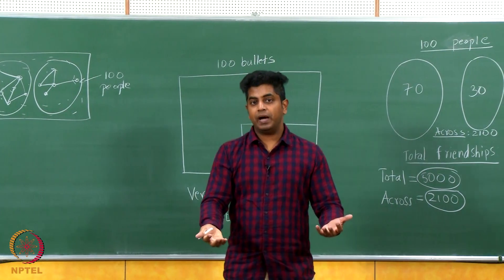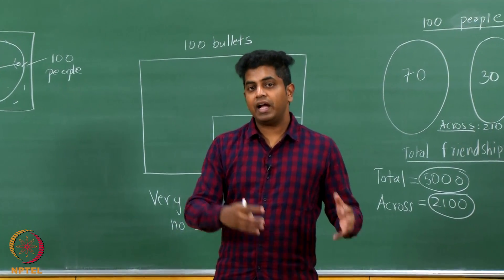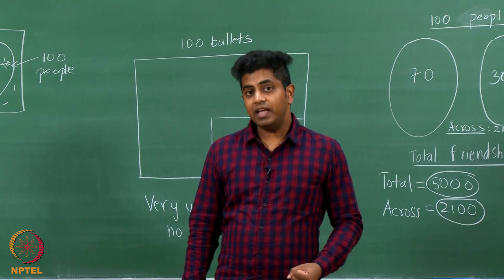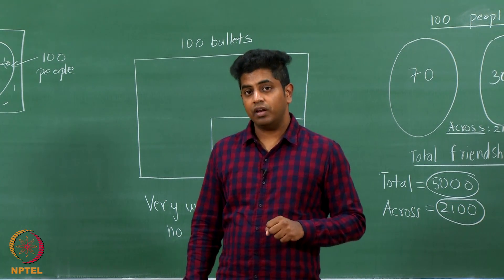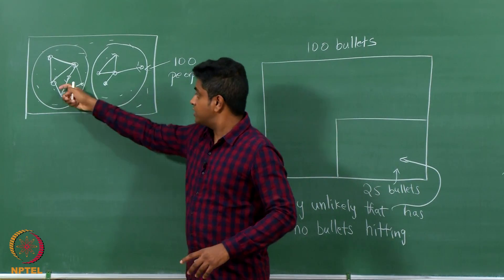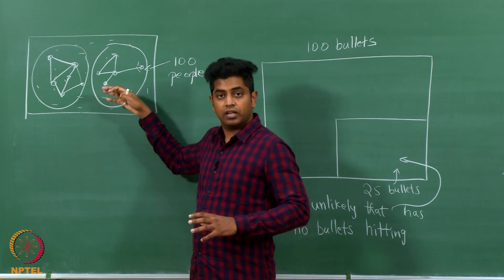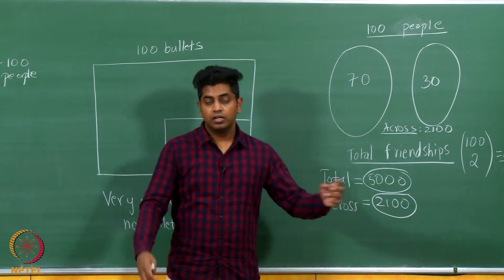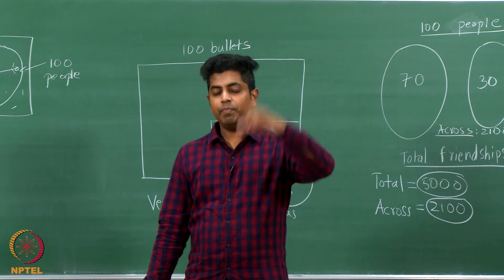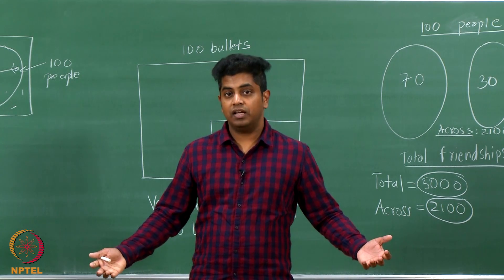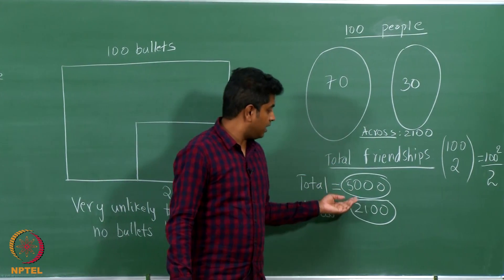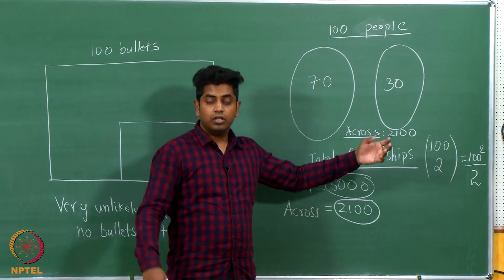Look at the analogy I gave you of the basket and balls. There is a basket full of balls, half of them are black, half of them are white. You blindfold yourself and then pick and you see that all the balls that you are picking are all black. It is unlikely. When you are blindfolded you should pick uniformly at random, white has to come somewhere. So the black balls, all the balls here are all the edges here. The white balls are the edges across and the black balls are the edges within. Edges across are roughly half the total number of edges. But when you are picking you are only picking black balls, you are not picking white balls and you are blindfolded.